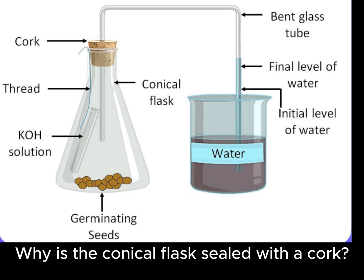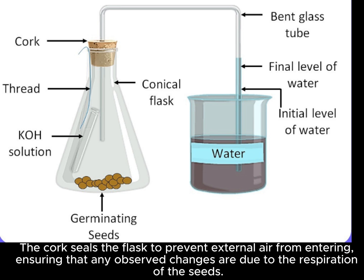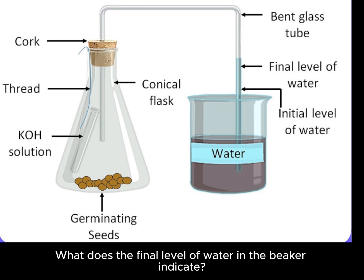Why is the conical flask sealed with a cork? The cork seals the flask to prevent external air from entering, ensuring that any observed changes are due to the respiration of the seeds.